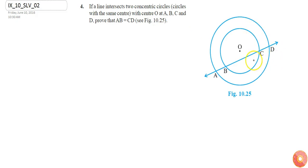In this question, we are given two concentric circles and a line intersects these two concentric circles. Concentric circles are nothing but circles having the same center. So the center of the outer circle and the inner circle are the same - both circles have the same center O.